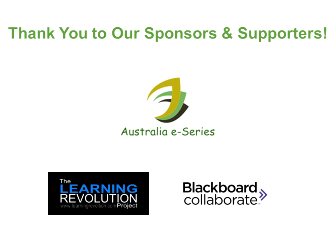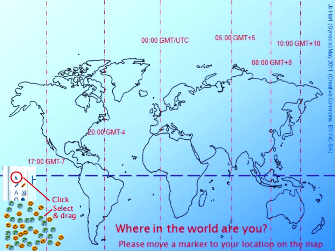First of all, we'd like to thank our sponsors and supporters: the Australia E-Series, the Learning Revolution and Blackboard Collaborate. We'd like to take a minute for you to use your mouse to click on one of the little emoticons in the bottom left-hand corner and simply drag it across to the map of the world where you are from. Click on one of the smiley faces or world icons and drag it across to wherever you're from.